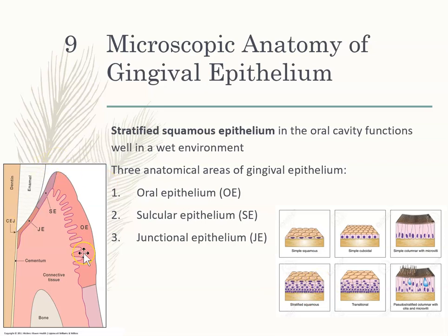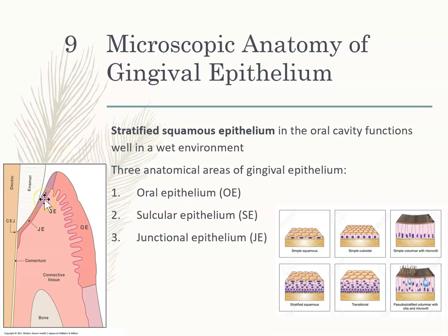There are three components of the epithelium. We have the oral epithelium, which is on the outside — what you see when looking at someone's gums. We have the sulcular epithelium, where the sulcus is — the side of the probe touches the sulcular epithelium when probing. And then we have the junctional epithelium at the base of the sulcus, where the tip of the probe hits.